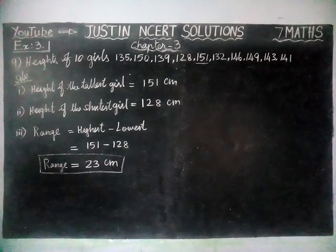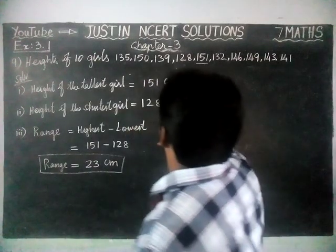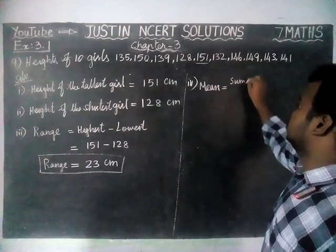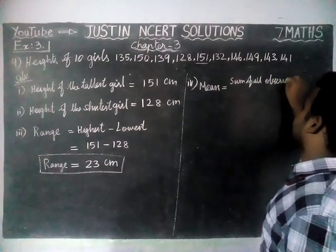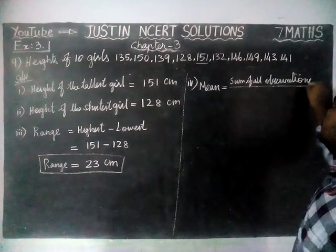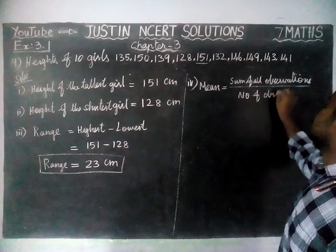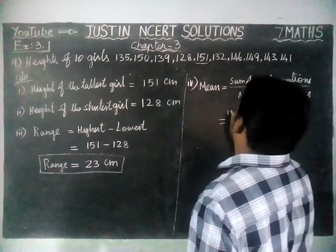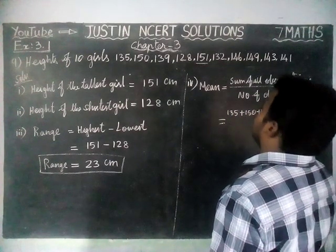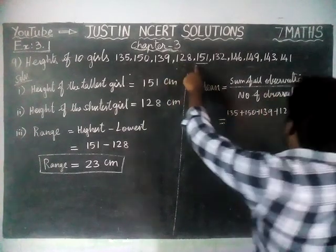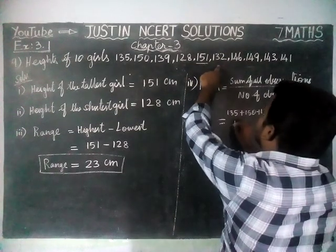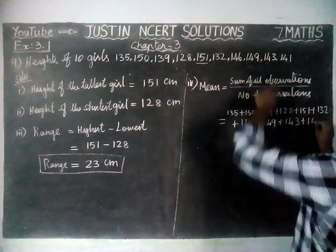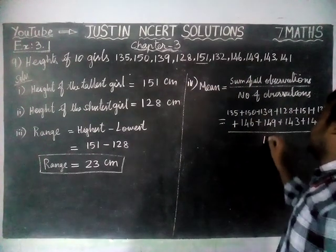Next, the fourth question: we have to find the mean. Mean of the given data — mean is equal to the sum of all observations divided by the number of observations. We are going to add all the observations: 135 plus 150 plus 139 plus 128 plus 151 plus 132 plus 146 plus 149 plus 143 plus 141, divided by 10, since there are totally 10 girls.